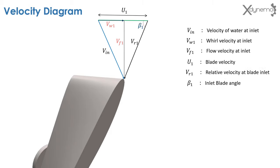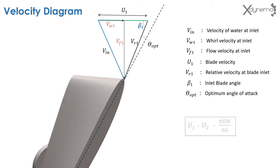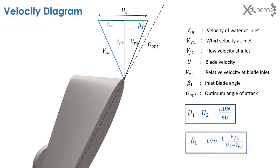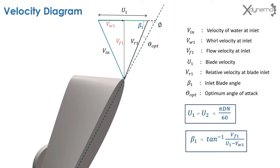Beta 1 is the inlet blade angle — it is the angle between relative velocity and blade velocity. Here is the cord line that connects the leading edge of the airfoil with its trailing edge. The relative velocity is not directed along the cord line. The angle of attack is the angle made by the relative velocity with the cord line. The airfoil section is inclined in such a way that this angle becomes the optimum angle of attack. These are the equations to calculate the blade velocity and blade angle at the inlet. Phi is the inclination angle of the blade section with horizontal; phi equals beta 1 minus the optimum angle of attack.